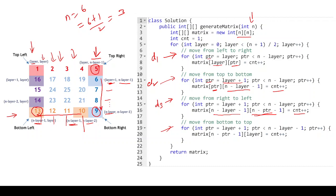For direction 4, bottom to top: direction 3 already completed element 13. Now for d4 we go from 14 to 16. The column stays constant at 'layer'. The row changes from n minus layer minus 1 downward, so we assign matrix[n-ptr-1][layer] = count++, and the row decrements as we go upward. This completes all directions for each layer.